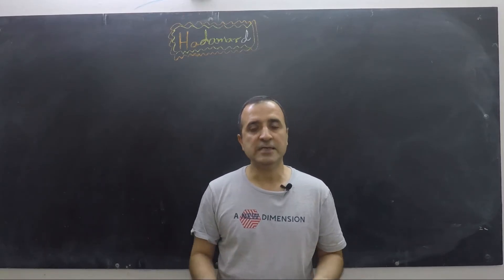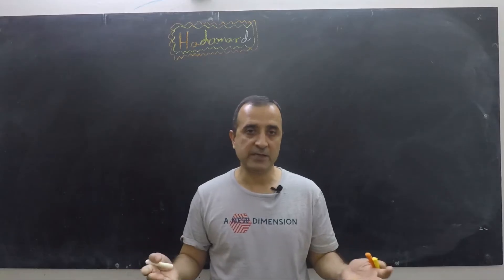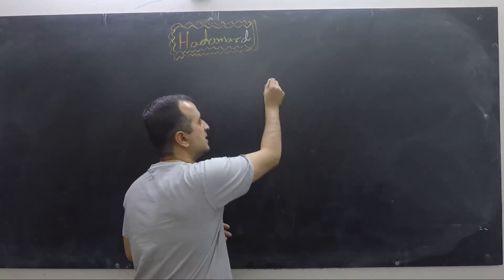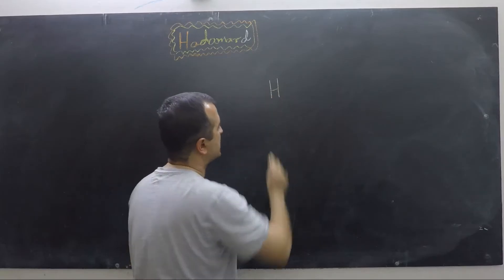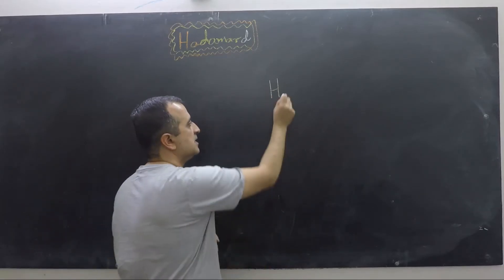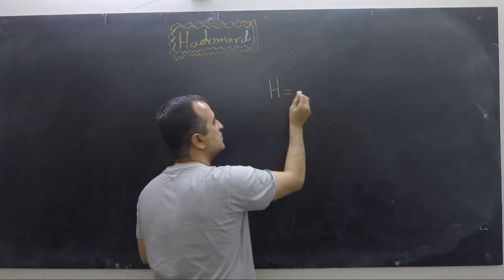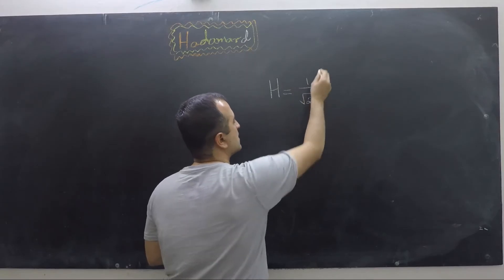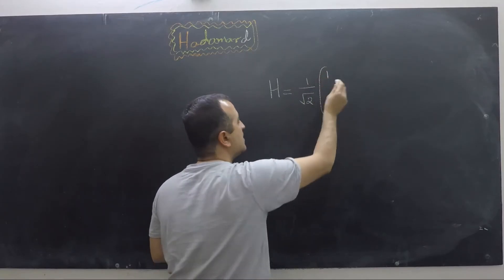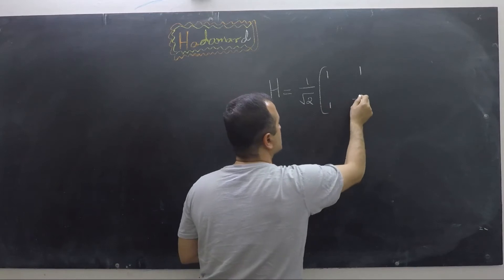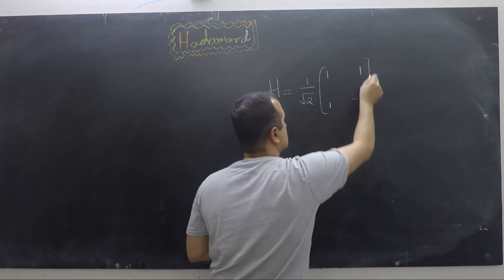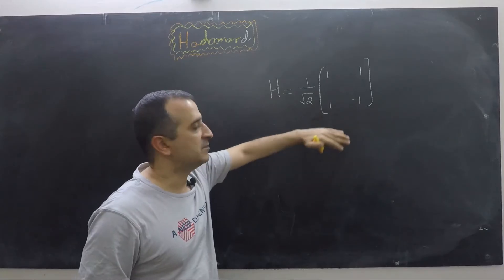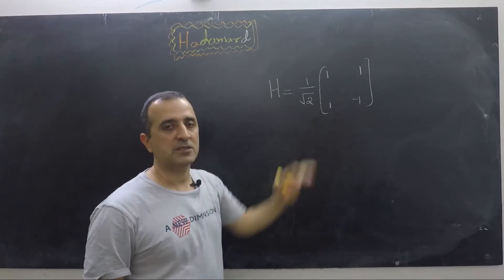So let's see what the matrix of the Hadamard gate is. The Hadamard gate, which we usually express as H, is equal to 1 over square root of 2 times the matrix with entries 1, 1, 1, −1. Because it is a 2×2 matrix, we can apply this matrix on a single qubit.